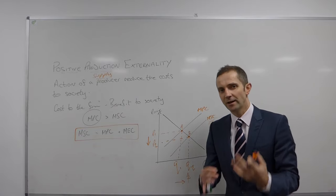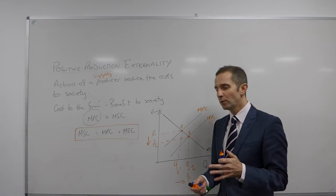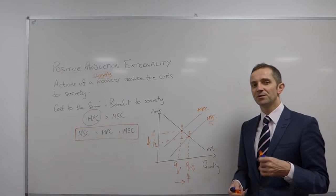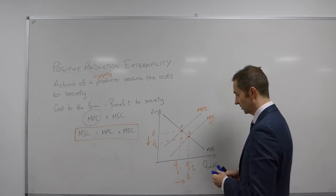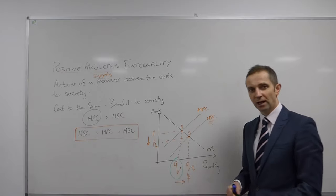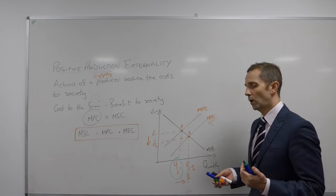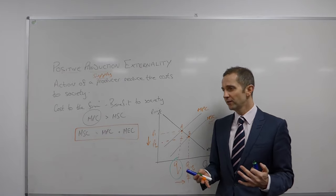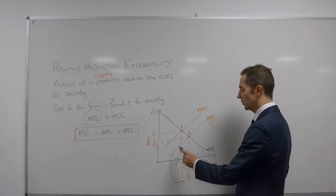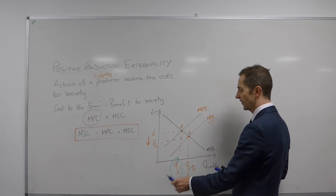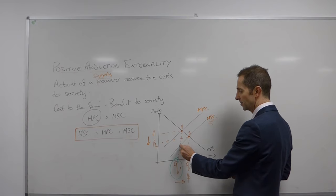Okay, so that's where we're at with the diagram. What about then the deadweight welfare loss as the result of the restriction of output to Q1, which is obviously an allocatively inefficient level, what cost is being imposed upon society? Well, as I've told you in all previous videos here, we work from Q1. And we go up and we identify the triangle, as it happens to be, once again, so we're just going to label this point C.